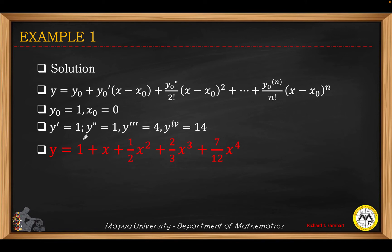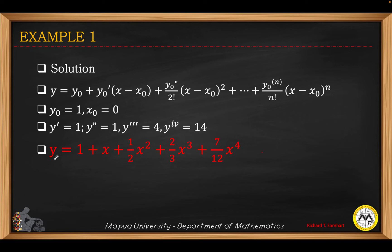Given all the values of the derivatives at the initial values, the Taylor polynomial is: y equals 1 plus x plus one-half x squared plus two-thirds x cubed plus higher-order terms. You can use this as your interpolating polynomial — at any value of x, you can solve for y.